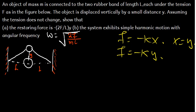Looking at the diagram, the original string was horizontal and the object has been pushed upward. We therefore have two tension forces, one on each side. We are told that those two tension forces are equal — the tension force doesn't change — so we have the same tension force F on both sides.